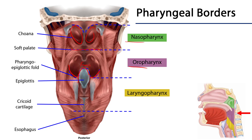Below the pharyngoepiglottic fold and epiglottis we have the laryngopharynx, which sits posteriorly to the larynx. This represents an opportunity for materials to either enter the laryngeal inlet — passing through the larynx into the exclusively respiratory portion — or continue inferiorly from the laryngopharynx into the entrance to the esophagus, which is at the inferior border of the cricoid cartilage, approximately the sixth cervical vertebra.